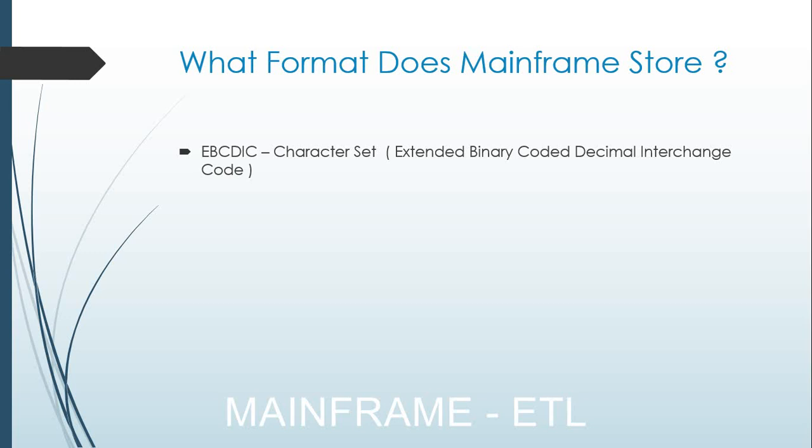What about the mainframe operating system — that is the ZOS operating system? What can it understand? How is the data stored inside, and what is the character set that it is using? The character set it uses is EBCDIC format — that we call Extended Binary Coded Decimal Interchange Code.